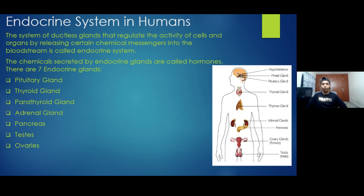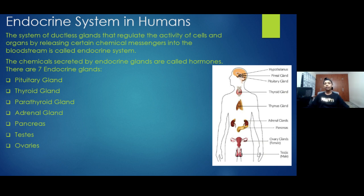There are few chemicals in the endocrine system. The chemicals secreted by the endocrine glands are called hormones.